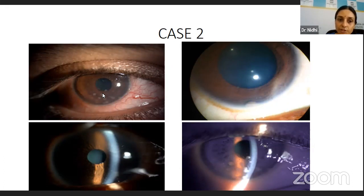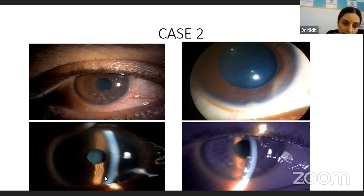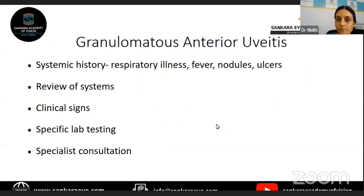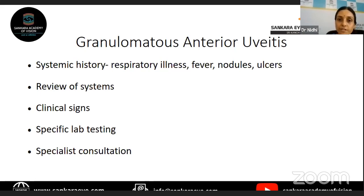The second case: you can see large mutton-fat keratic precipitates, circumcorneal ciliary congestion. The patient has a large iris granuloma in the angle. You can also see Koeppe nodules and other iris nodules all over the iris, or post-race synechiae forming along with granulomatous KPs. This is a case of acute granulomatous anterior uveitis. The importance of making a diagnosis of granulomatous anterior uveitis is that there are a number of systemic diseases associated with it, so proper systemic history becomes important and investigations will be based on your systemic history and examination.